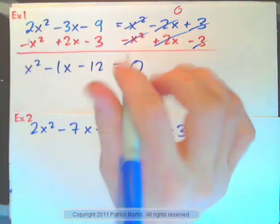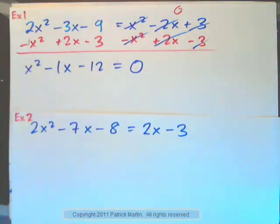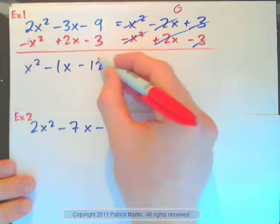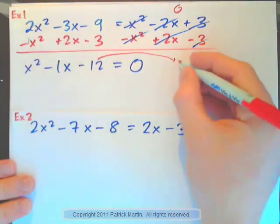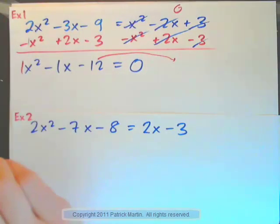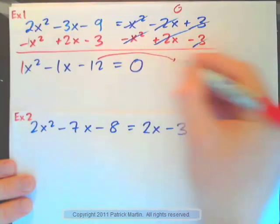So now we're back to what we know. We just need to factorize this and solve it. So press pause on the video and factorize it and get the answer. Now I'll do it. List the pairs of factors of 12. This is the short method, by the way, because we just have a 1x squared. So short method. So pairs of factors of 12.